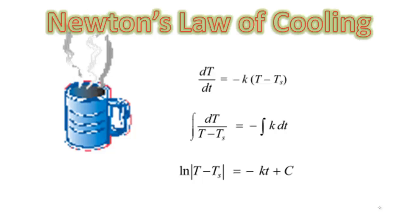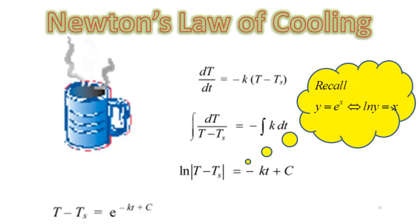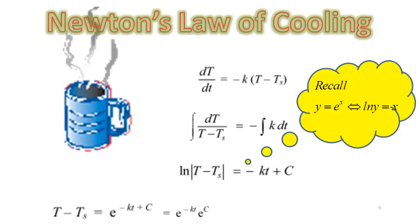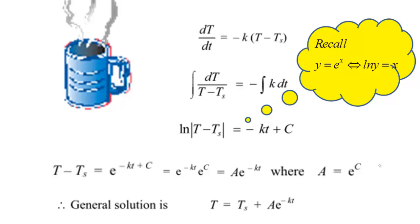Now we can get rid of the logarithm using the fact that if y equals e to the power x, then ln(y) equals x. So this means T minus Ts equals e to the power (negative Kt plus c). Since e to the power (negative Kt plus c) equals e to the power (negative Kt) times e to the power c, and e to the power c is a constant we call A, in general we have T equal to Ts plus A times e to the power negative Kt.